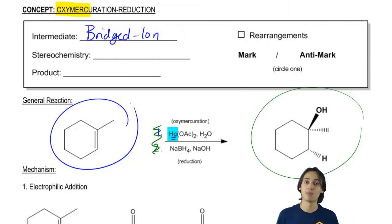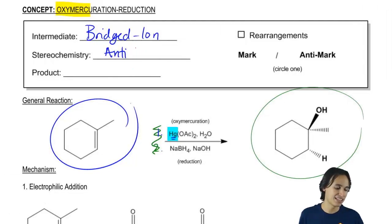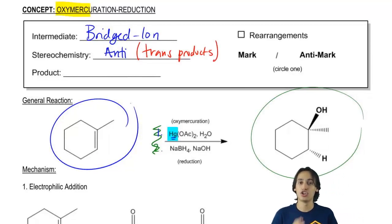The stereochemistry here is actually going to matter. It's going to be decisively anti. So what that means is that anti-stereochemistry is the same way as saying that at the end you're going to get trans products. So if you ever hear me say anti, that just means that at the end you're going to expect your alcohol and your H to be trans to each other.